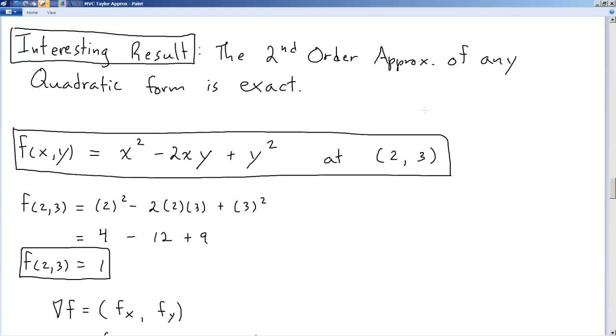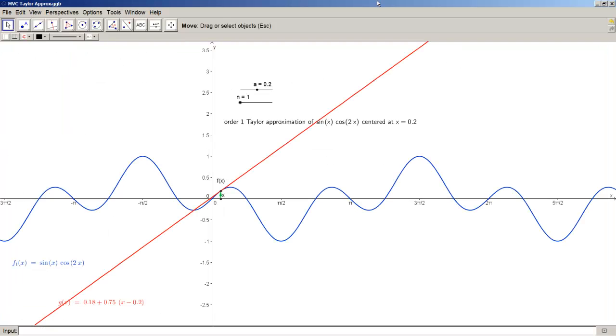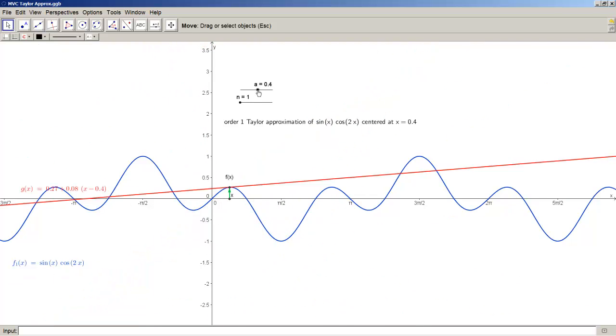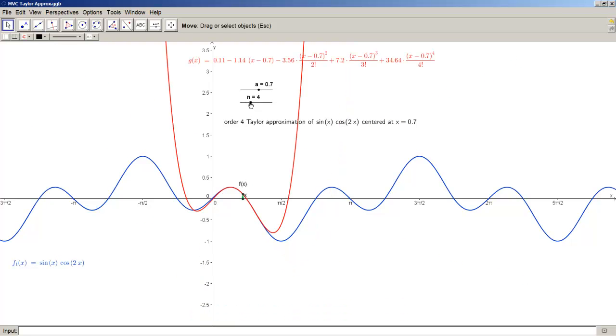And so this is what we have for a Taylor approximation of order one is just the tangent line at that particular point. I'm sliding a back and forth. The second order is, of course, some polynomial, third order, fourth order, fifth order, and so on. And I made it go up to ten.